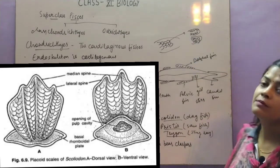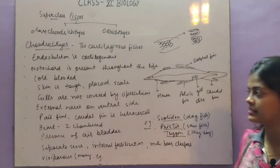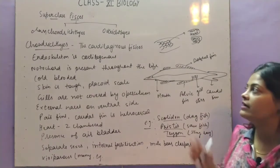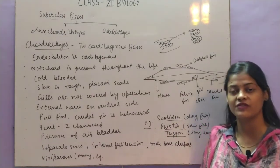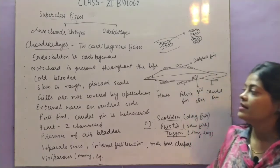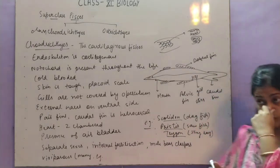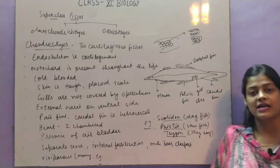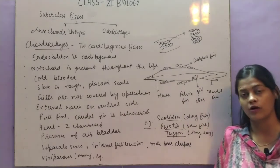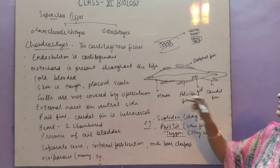Placoid scales are found in Chondrichthyes and their skin is tough. They are fishes with jaws, and their jaws are very strong. The gills are not covered by operculum. As you know, gills are present because they belong to phylum Chordata, and in Chondrichthyes the gills are clearly visible.